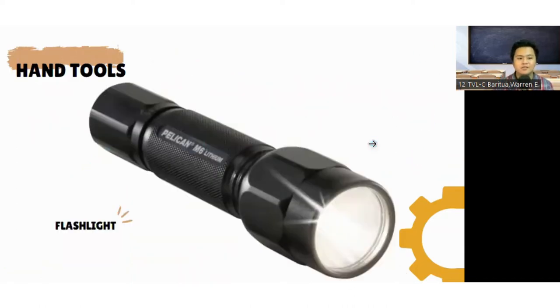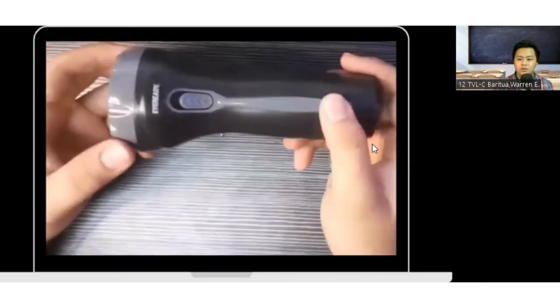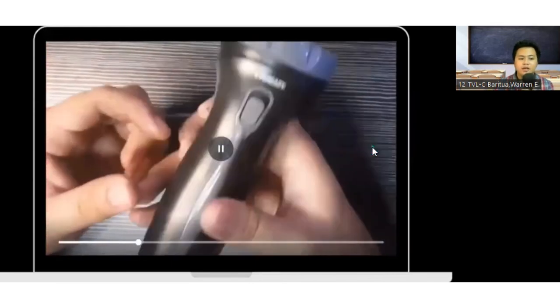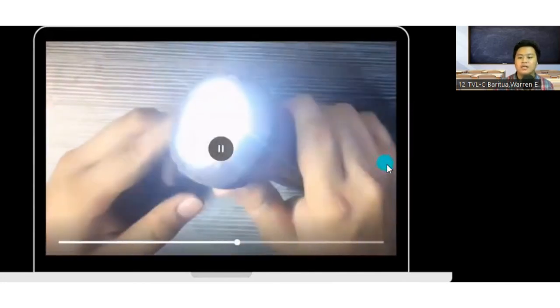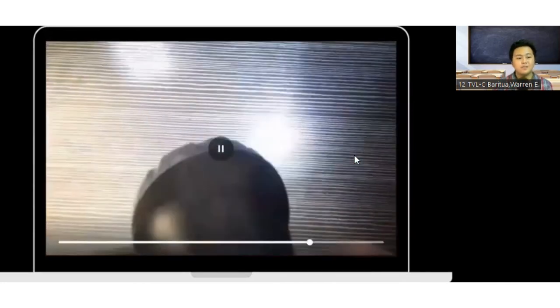The flashlight is a portable light source that will give you visual vision in dark areas. It is used to light up areas that you cannot see well and having this is essential when maintaining or repairing computers. Seeing everything ensures that computer components will not be damaged during cleaning. Speaking of cleaning, let's proceed to the cleaning tools.